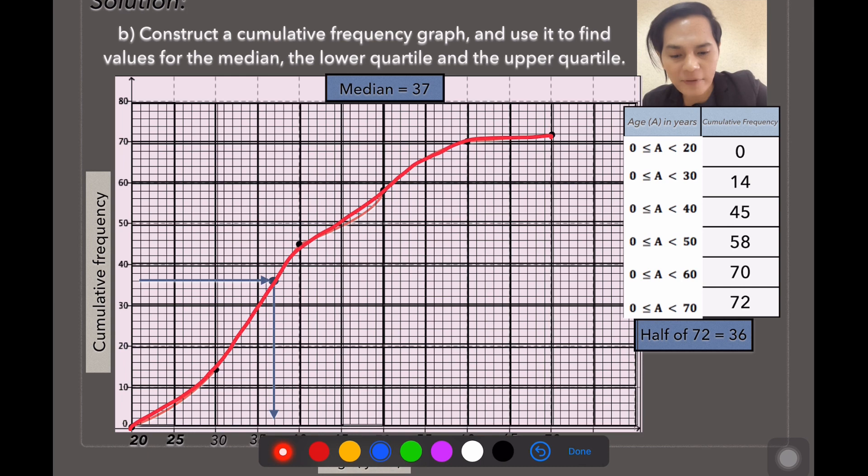Okay, the next thing that we're going to find out is the lower quartile and the upper quartile. So remember, the lower quartile is one quarter or one-fourth of the total frequency, which is 72. So one-fourth of that is 18.